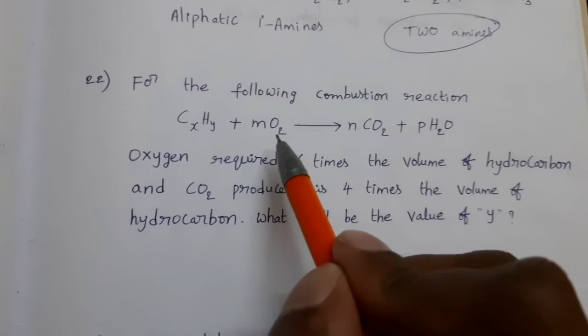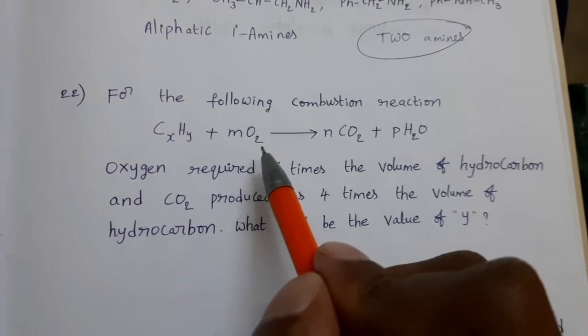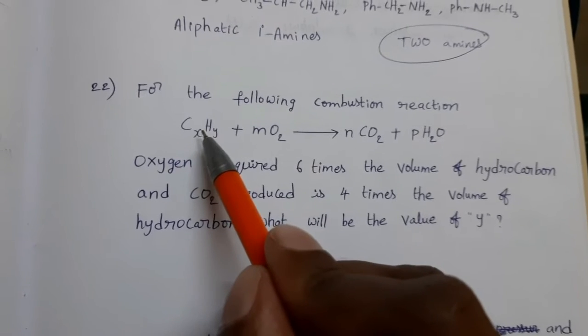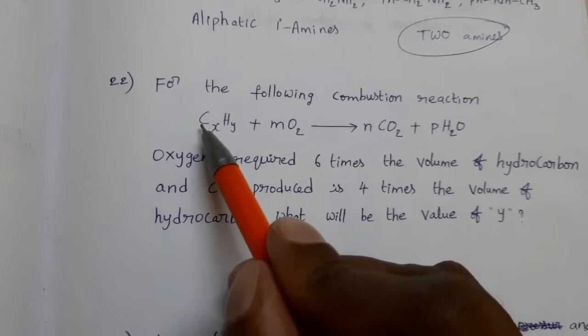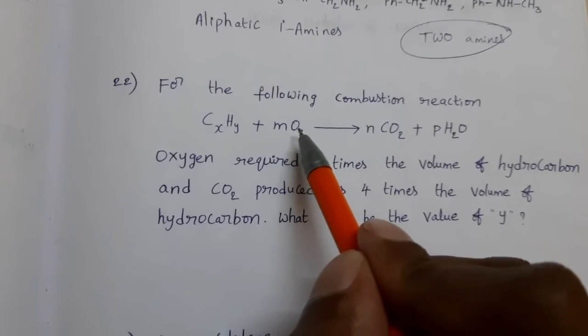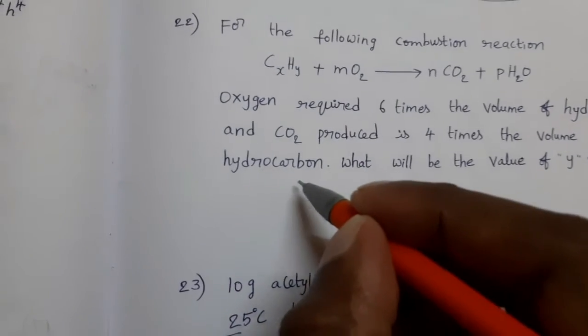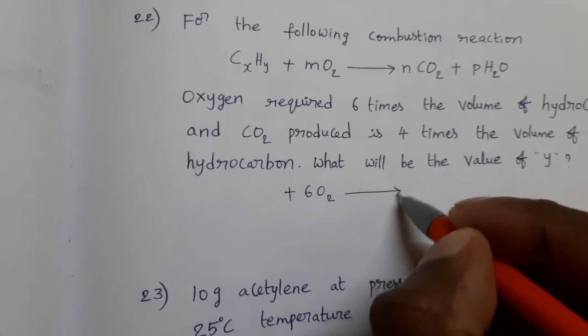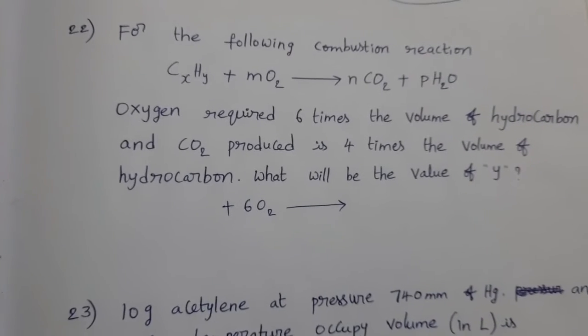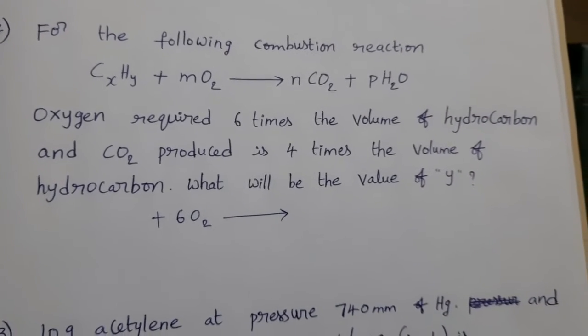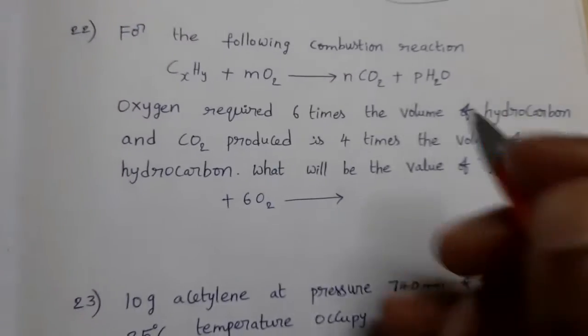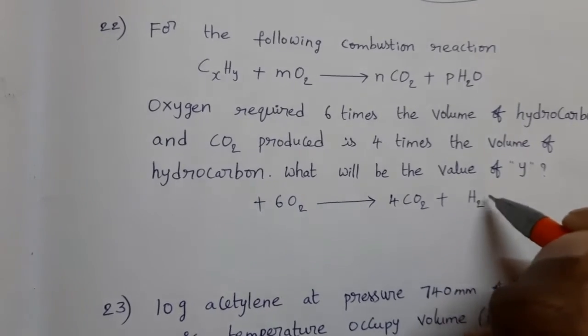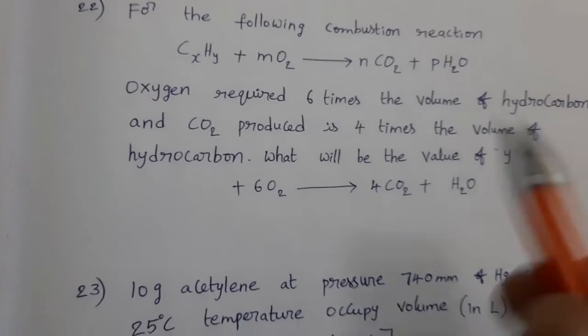This Y value we should find out. Understand given information carefully. Oxygen required 6 times the volume of hydrocarbon. Here, this is hydrocarbon, general representation. Now, 6 times the volume of oxygen compared to volume of this. That means, suppose hydrocarbon volume is one volume. This oxygen required 6 volumes.